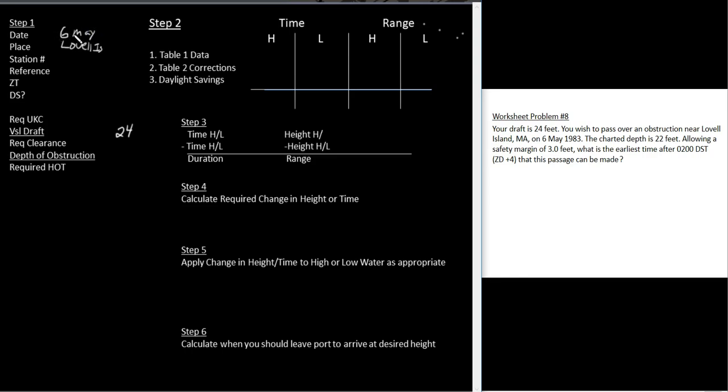The charted depth is 22 feet, so the depth of the obstruction is 22 feet. I'm going to put that there. And the safety margin is 3 feet. Another way of saying safety margin is under keel clearance. So that's going to go up here.